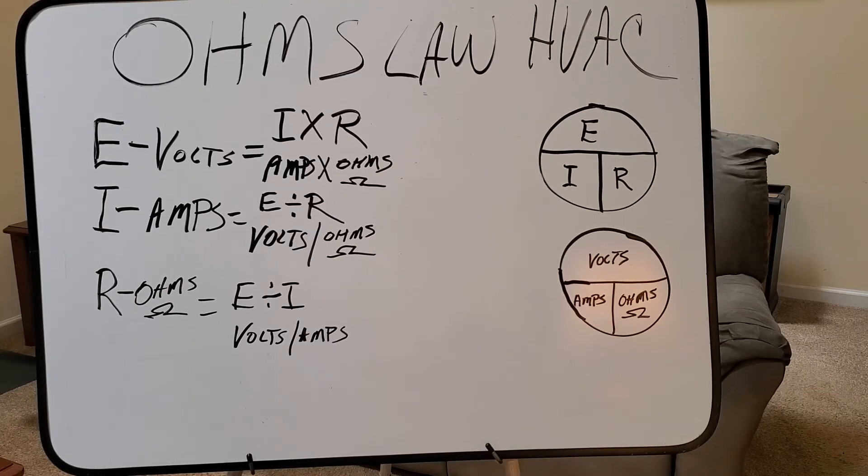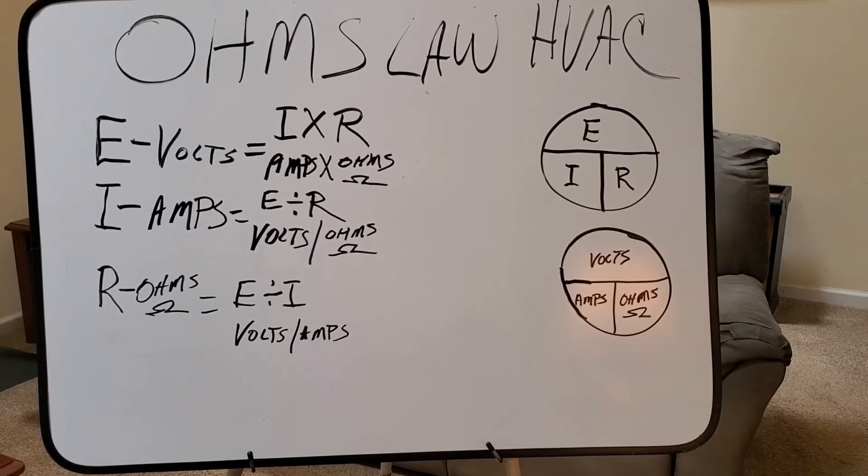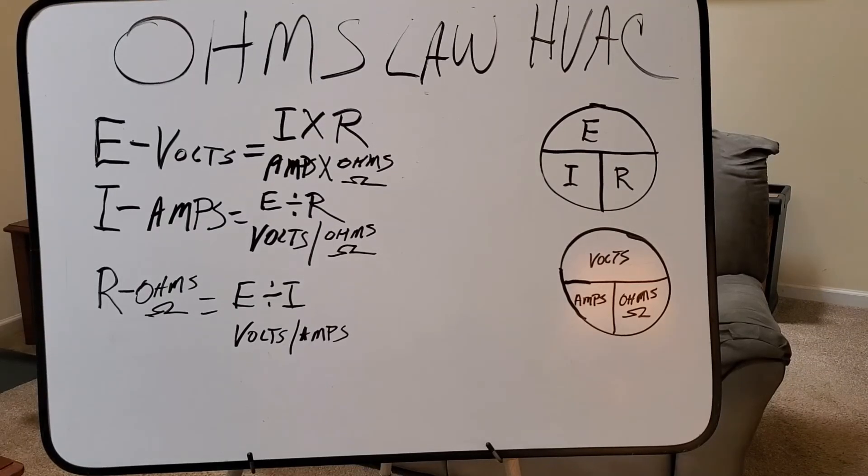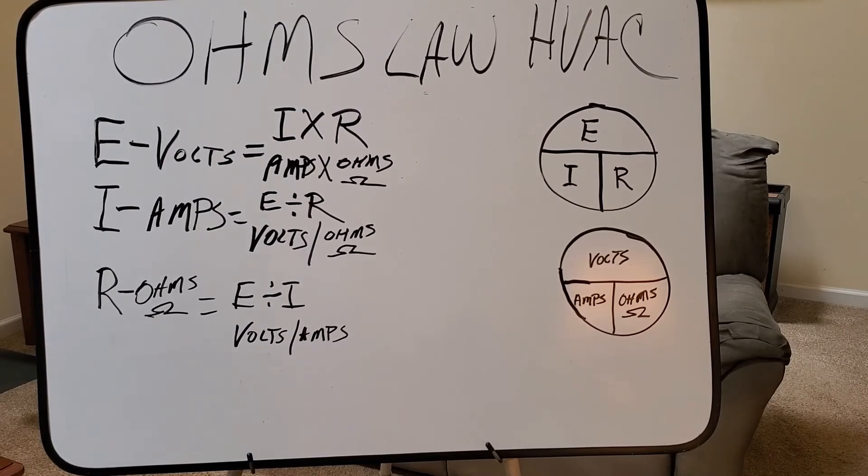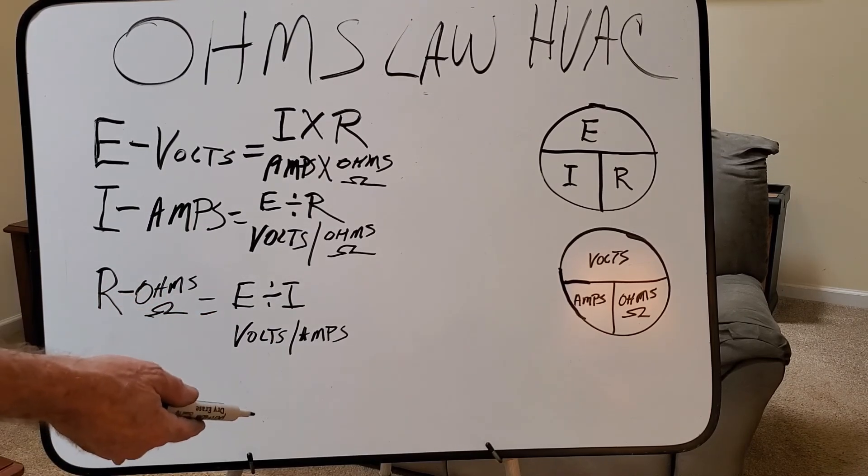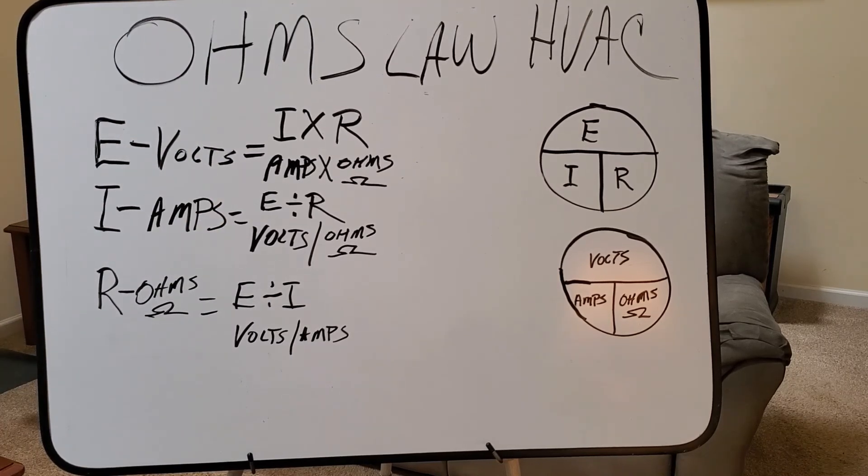There is three types of ohms or resistance that we deal with. One is pure resistance. That's heat strips. Another one is inductive reactance. That's motors and coils, solenoid coils and that sort of thing that we deal with. Another one would be capacitive reactance. That would be your capacitors. So there's three parts to the resistance that we deal with. We have one or two parts for your amps and your volts.